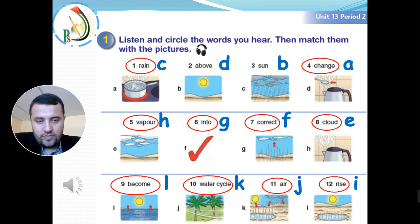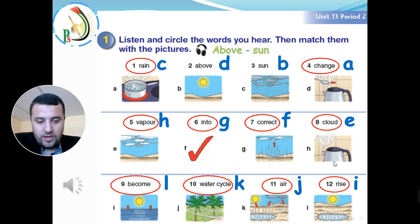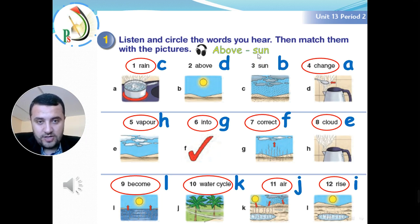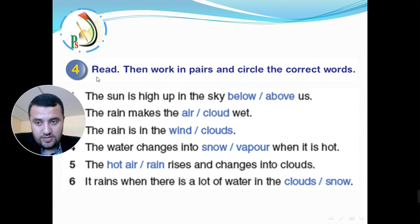Now let's move to the next activity. We will skip activity two and three because we took them in the previous lesson. So our lesson today is about two activities: activity one and activity four on page 29. These words — 'above' and 'sun' — we have to write them down because you didn't hear them. Let's start with activity four: read, then work in pairs and circle the correct words.